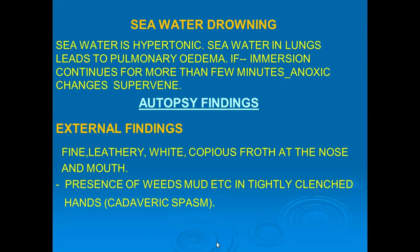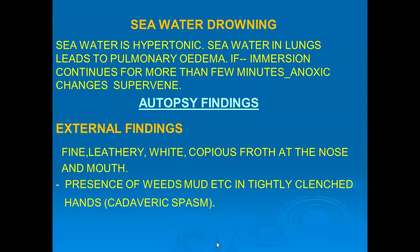Autopsy findings when death is due to drowning. First, external autopsy findings: Froth is very typical in ante-mortem drowning. Froth comes from the nose and mouth. It is fine, leathery, white, enormous in amount, and very tenacious — you remove it, compress the chest, and it returns. So it is produced in enormous amount.